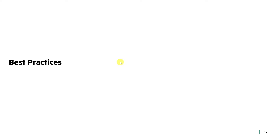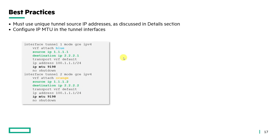For best practices: you must use unique tunnel source IP addresses across different VRFs, as discussed in the details section. When two different VRFs are in use, each needs a unique source IP address. You also want to configure the IP MTU on the tunnel interfaces.